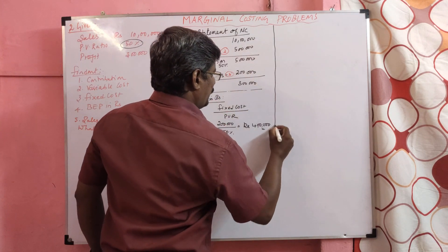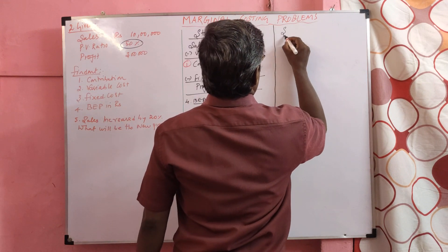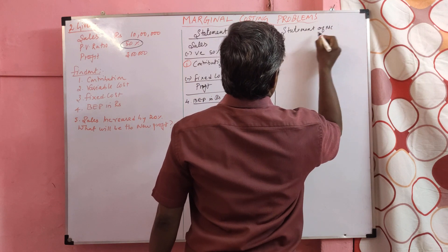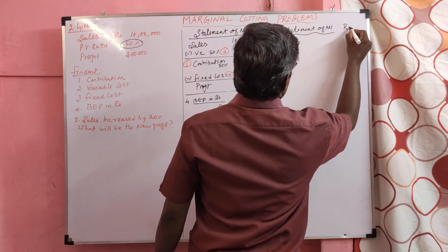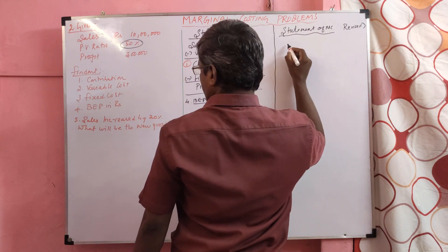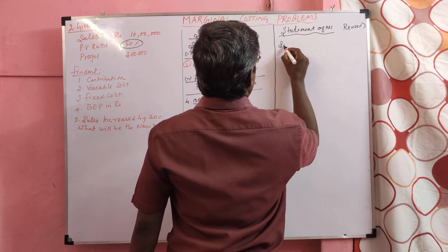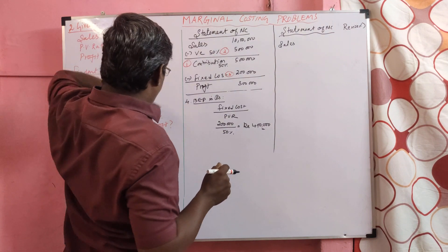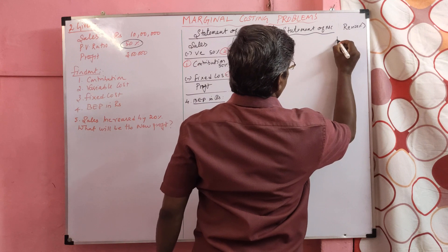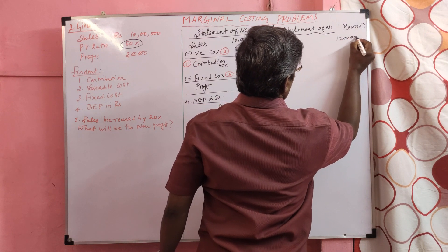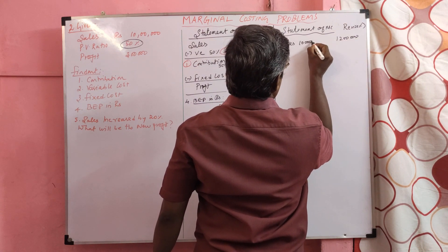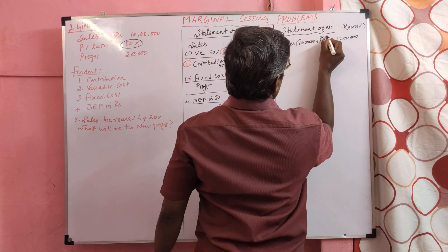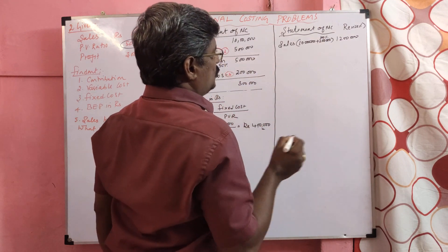We are going to prepare a revised statement of marginal costing. Sales: existing sales are 10 lakh. Increase by 20% — that is 2 lakh. So new sales is 12 lakh. Minus variable cost — we do not know. Contribution also we do not know. Fixed cost we know — same 2 lakh. We want to ascertain the profit.